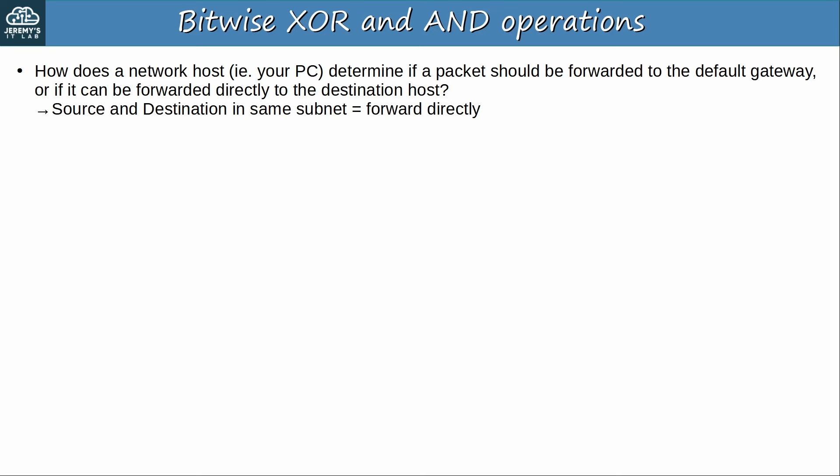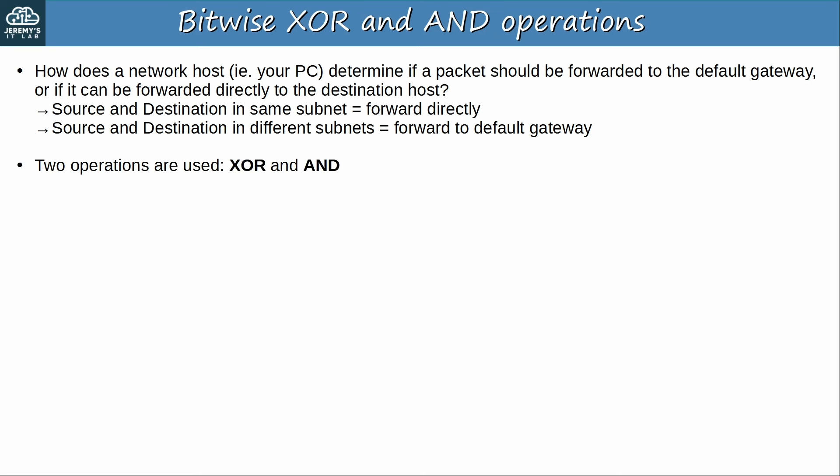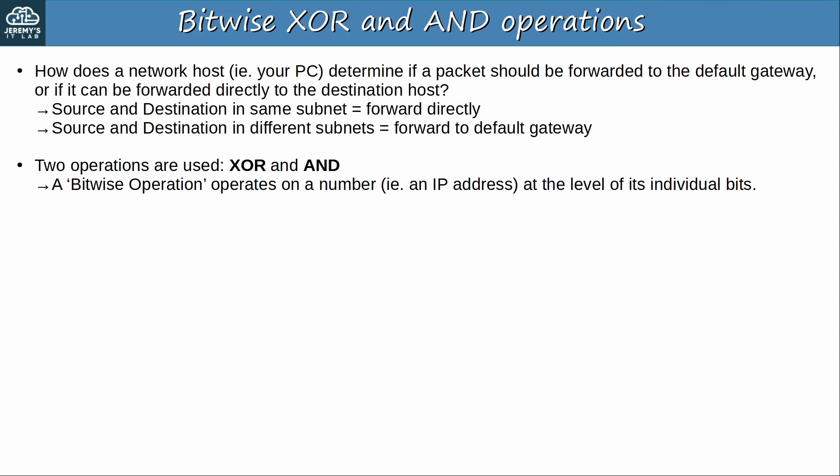If the source and destination are in the same subnet, the packet can be forwarded directly to the destination. That means the packet will be encapsulated in a frame, and the destination MAC will be the destination host's MAC. But if the source and destination hosts are in different subnets, the source host will send the packet to its default gateway, and the frame's destination MAC will be the MAC of the default gateway. For a host to determine if the destination is in the same subnet or not, two operations are used: XOR, which stands for exclusive OR, and AND. These are bitwise operations, which means they are used to operate on a number, such as an IP address, at the level of its individual bits.